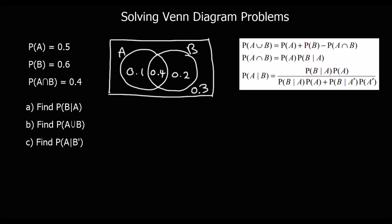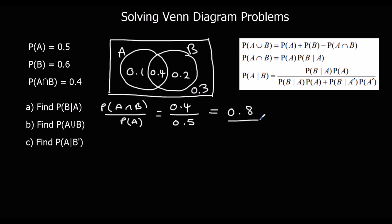P(B|A) = P(A∩B) / P(A) = 0.4 / 0.5 = 0.8. P(A∪B): these are the A sections and the B sections; the union is all of them together, which is 0.7.